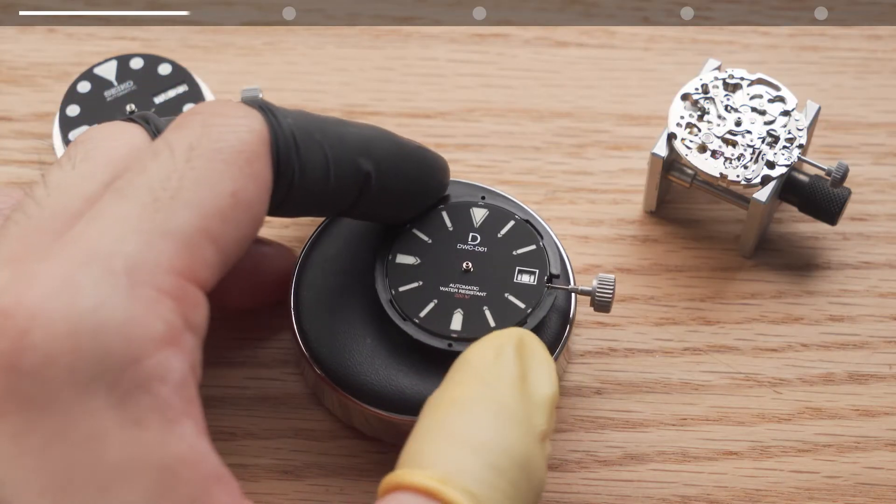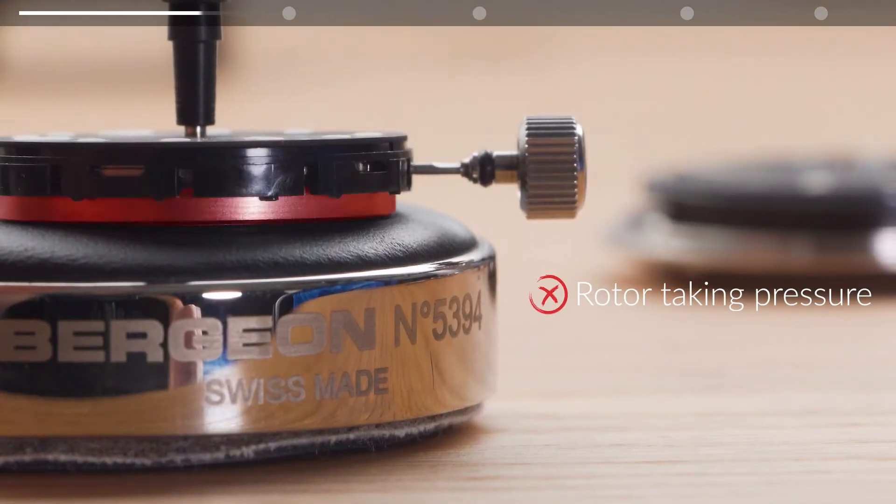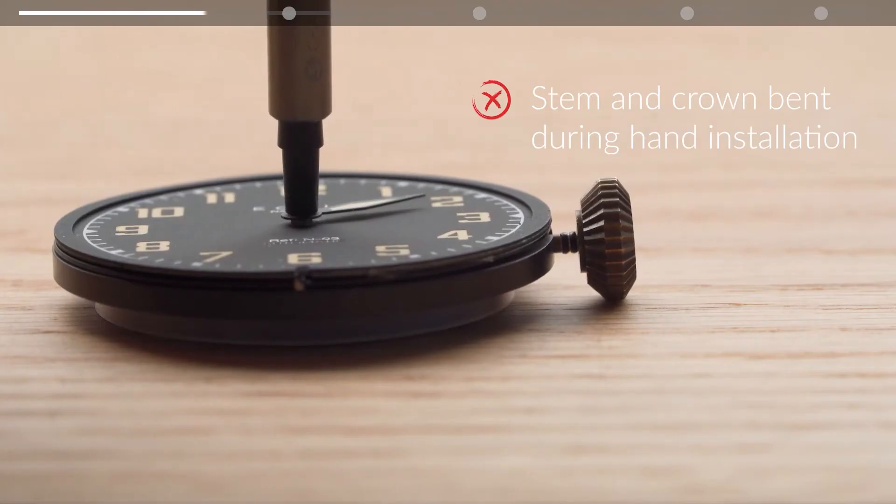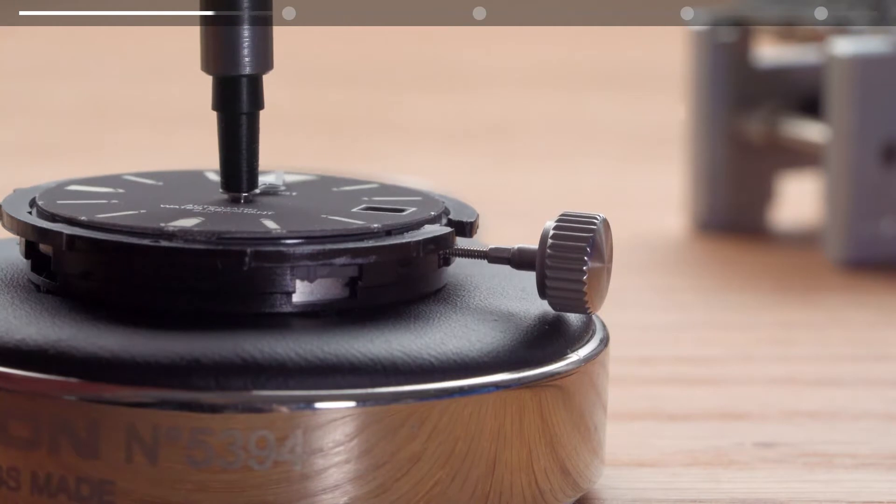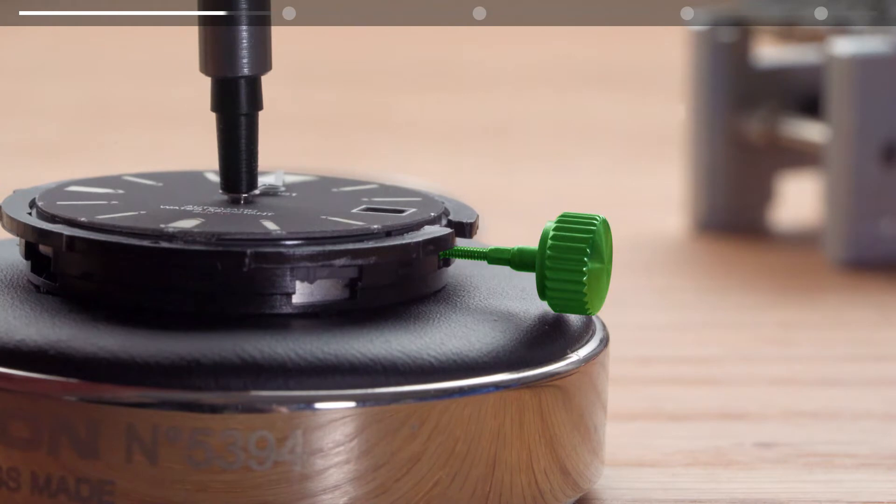Let's prop up the movement and dial assembly. There are multiple ways to do this but make sure the bottom side of the movement, the stem and the crown are not taking any pressure during the installation process. In this example there is only pressure on the movement holder, not on the movement itself and not on the crown or stem.